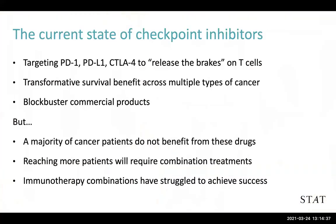I want to start by going back and explaining the entire current state of immunotherapy on one slide. As most of you probably know, the current checkpoint inhibitors target three proteins right now: PD-1, PD-L1, and CTLA-4. When you block those proteins — those connections between T-cells and cancer cells — you're essentially releasing the brake on T-cells.